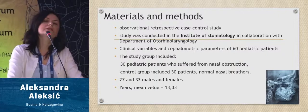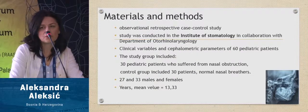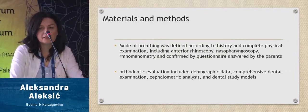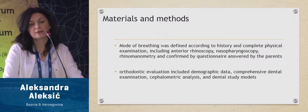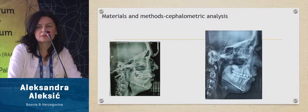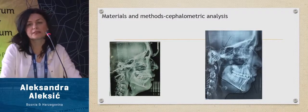We observed 60 pediatric patients with treated formal occlusion. The study group included 30 patients with signs and symptoms of chronic nasal obstruction; the control group included 30 patients who were normal nasal breathers. They were almost equally female and male, with an average age of 13 years. Patients were classified as nasal or mouth breathers according to predominant mode of breathing through history, clinical examination, orthodontic evaluation including dental examination, cephalometric analysis, and dental study models. Cephalometric analysis was made to compare parameters that might be influenced by different respiratory modes in the two groups.